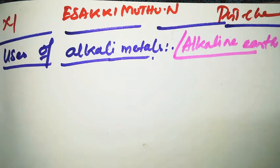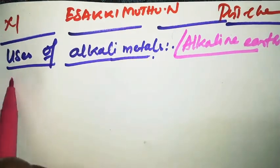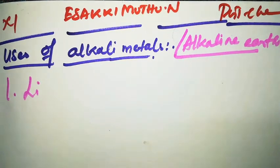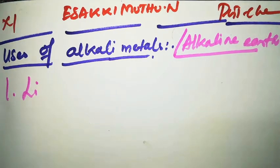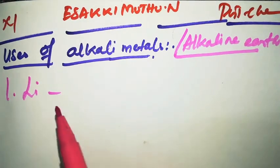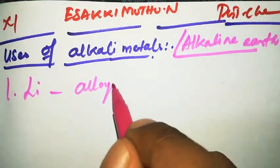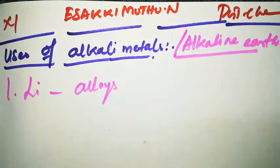Lithium is one of the alkali metals. Lithium metal is used for alloy formation. Lithium alloys are used for making useful alloys.